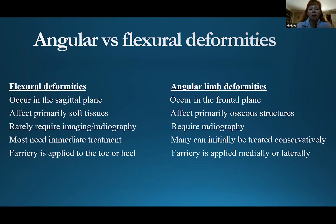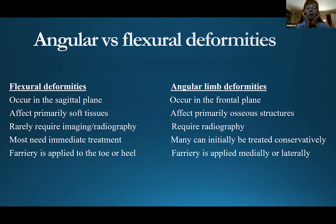Flexural deformities affect primarily, almost exclusively, soft tissue. There are a couple of odd and very unusual exceptions, but generally it's a soft tissue issue, whereas angular limb deformities are primarily osseous structures that are affected. For flexural deformities we almost never need to radiograph them. Angular limb deformities — finances and circumstances allowing — radiography is always useful for coming up with a plan and deciding what the likely outlook is going to be. Flexural deformities are a condition where you just can't sit and wait; you have to come up with a plan right away. And remember that farriery for a flexural deformity is going to be applied to the heel or the toe, whereas in angular limb deformities it's going to be on the side of the foot — either medially or laterally.